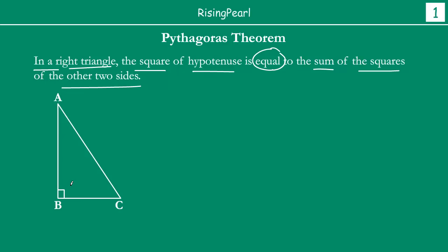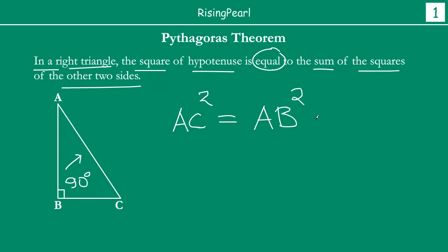So in our triangle ABC, angle B is 90 degrees. ABC is a right angle triangle, and we know that the hypotenuse is the side which is opposite to 90 degrees. So AC is the hypotenuse. Pythagoras Theorem tells us that AC² (hypotenuse square) is equal to the sum of squares of the other two sides: AB² plus BC².